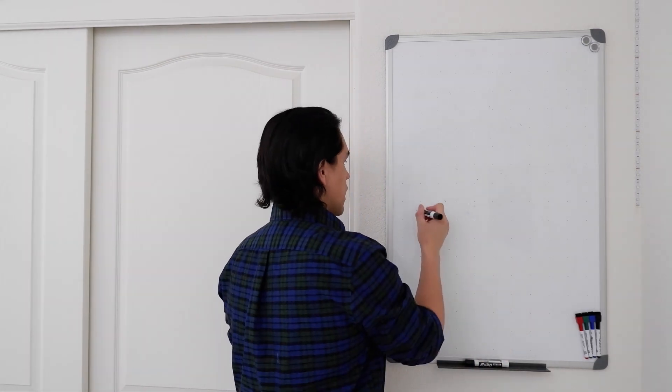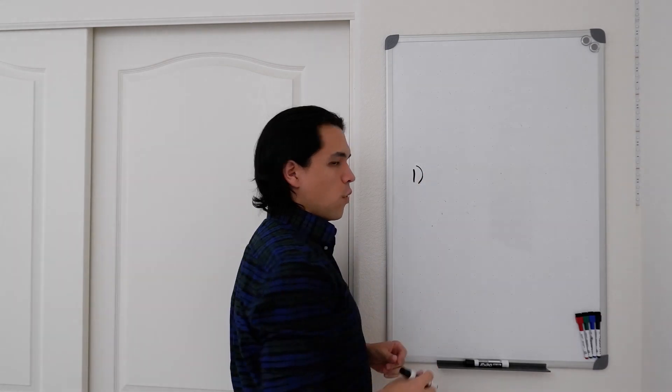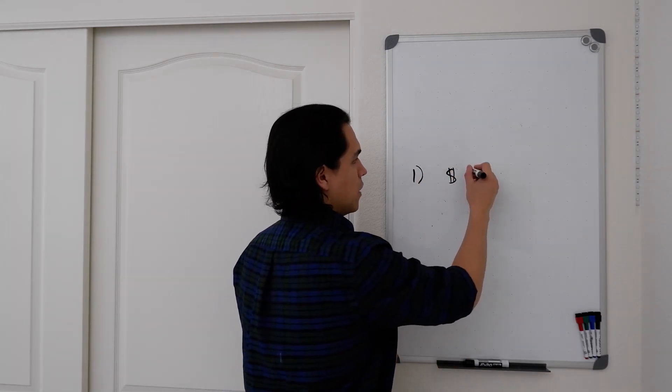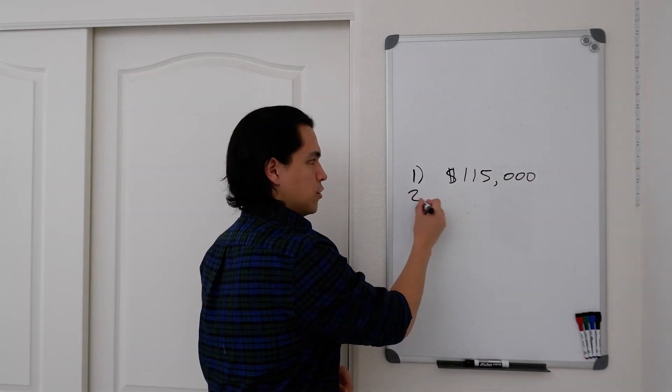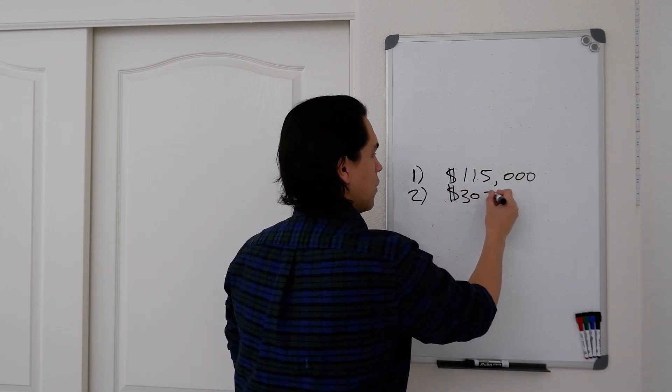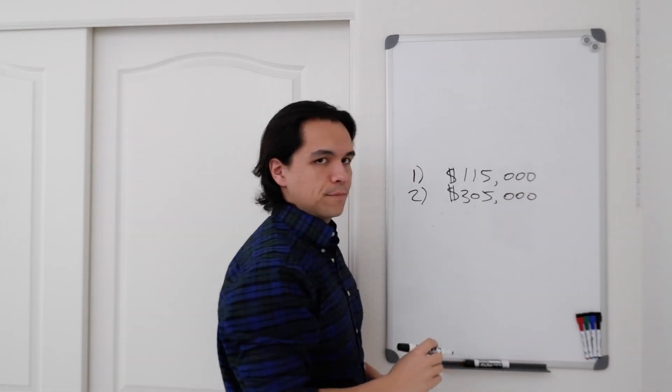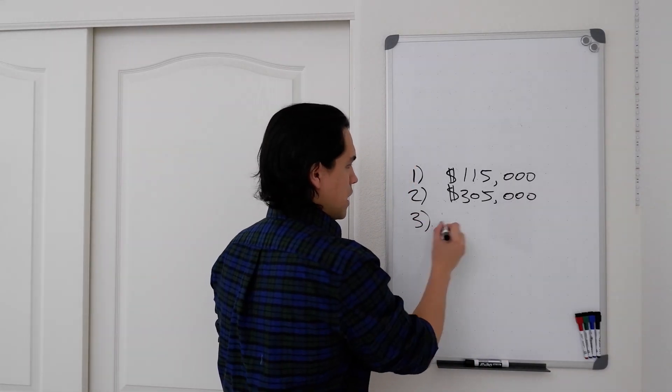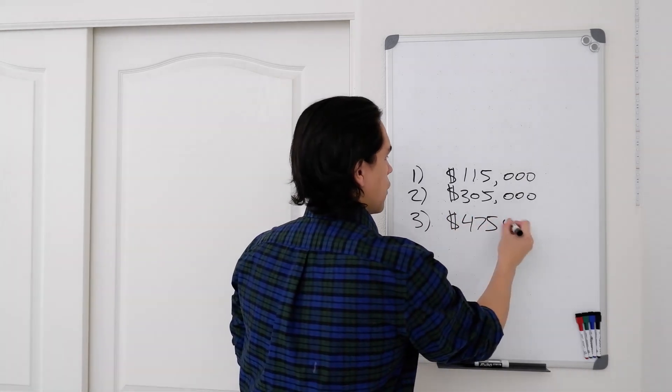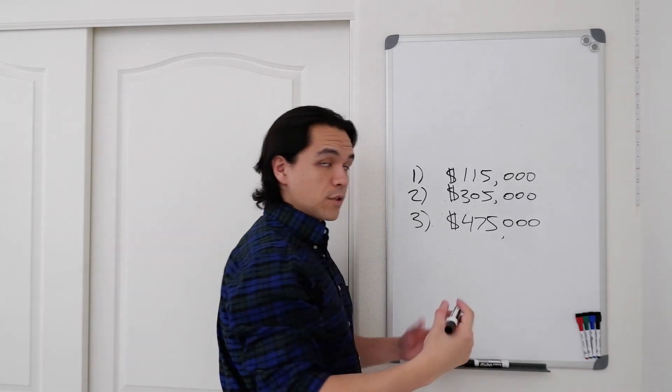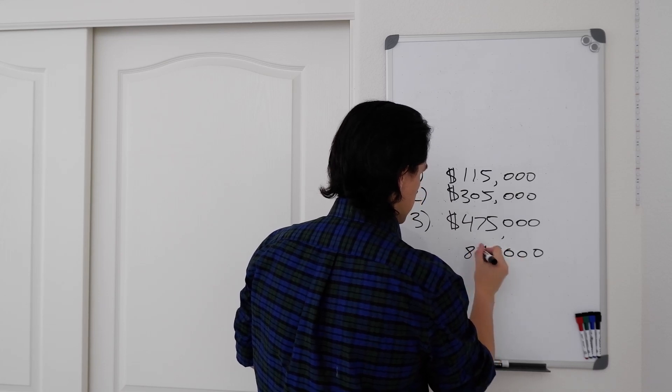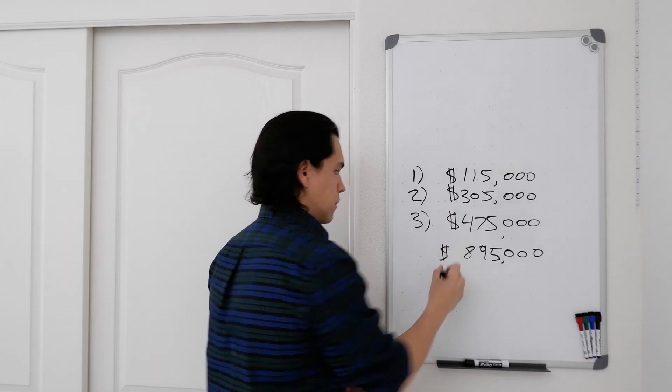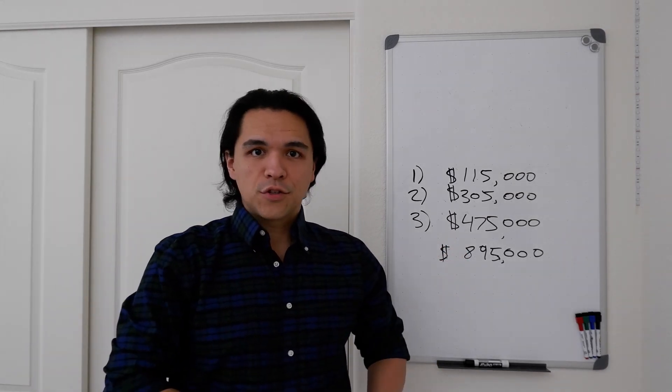I have three homes with three mortgages. So let's look at home number one. Home number one has a mortgage with a balance right now of about $115,000. Home number two has a mortgage with a balance of about $305,000. And home number three has a mortgage with a balance of about $475,000. So if we do the math here and add this up, about $900,000, which is close to a million.